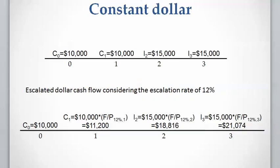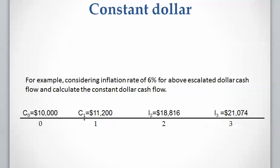Let me explain how to calculate the constant dollar cash flow with an example. In the previous video, we applied an escalation rate of 12 percent to the given cash flow. To calculate the escalated dollar cash flow, we compound each year's payment by the 12 percent escalation rate, and the result is the escalated dollar cash flow as you can see here.